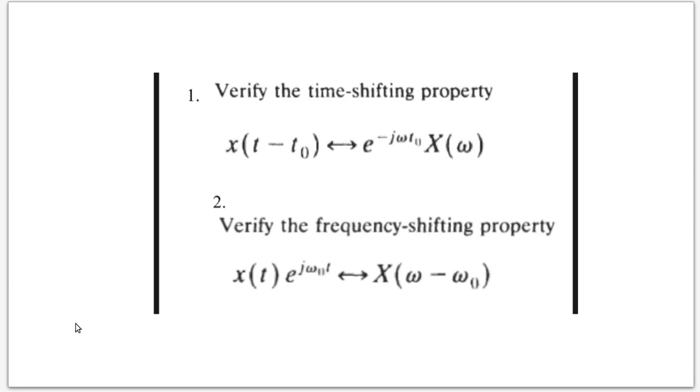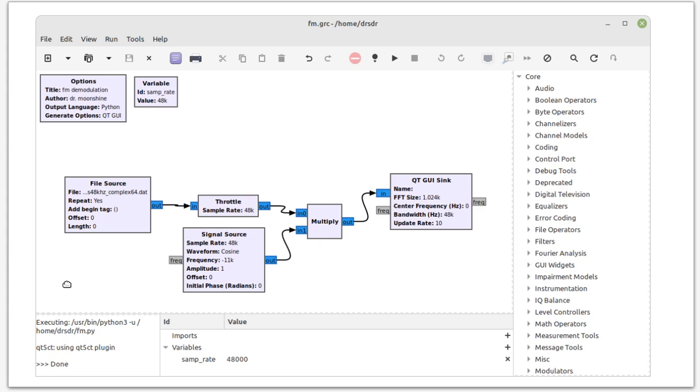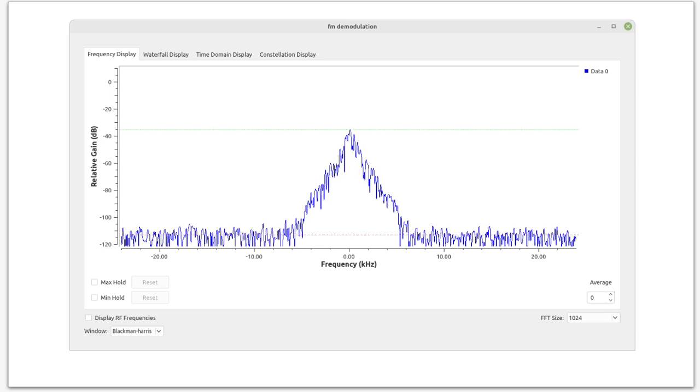And that's what we've done here. The incoming signal is the file source. We're multiplying that signal by a negative 11 kilohertz complex phasor. And now when we look at the FFT, we should see our signal at zero Hertz. And indeed we do, so we've done a good job getting our signal truly at baseband, now that it's at zero Hertz.